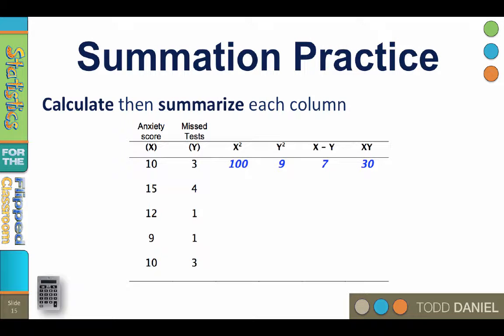So let's practice. Using the provided x and y values, create four new columns and then summarize each one. I have already started the x squared column. I took the x value 10, squared it, 100, and then I wrote 100 in the x squared column.